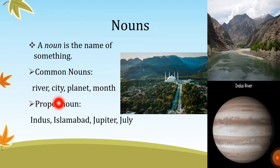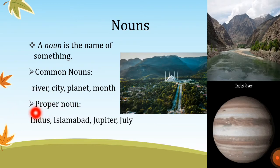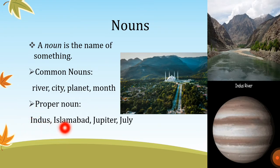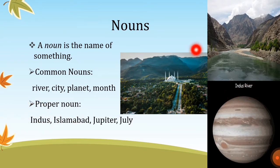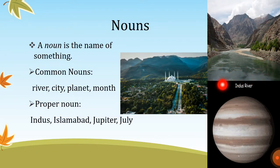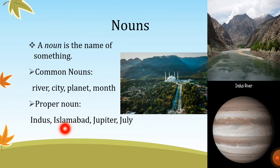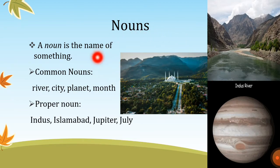Proper nouns specify a particular thing and they always start with a capital letter. For example, 'The River Indus is the largest river in Pakistan' — we know we're talking about the River Indus, which is a proper noun for a specific river that flows in Pakistan. When you say 'I live in Islamabad,' Islamabad is a proper noun starting with a capital letter, referring to a particular city in Pakistan.